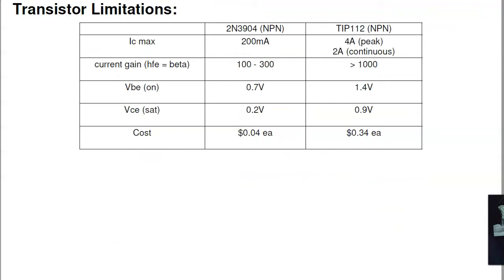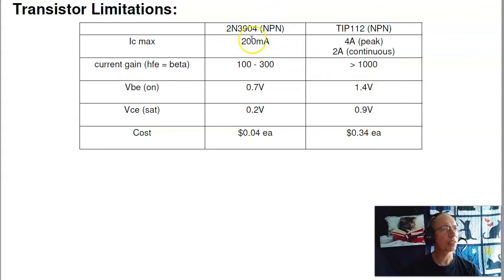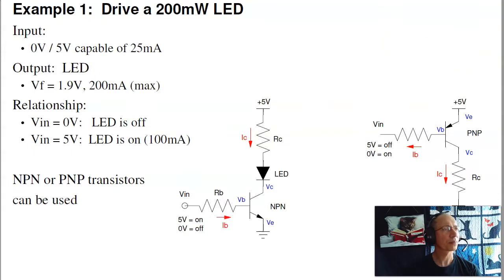The first step is pick the transistor you want to use. We've got two transistors in lab: the 3904s that can do up to 200 milliamps, or the TIP transistors that can do up to 2 amps continuous, 4 amps peak. If I want to drive something that needs less than 200 milliamps, I can use the 3904.